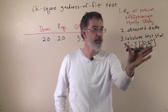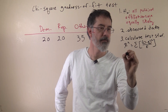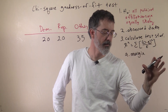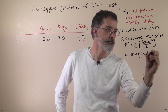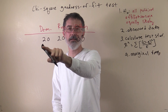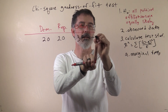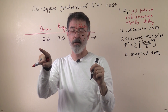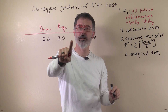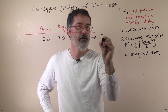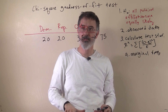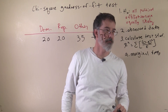Before we can calculate this test statistic, we first need our marginal frequencies, just like we did for the chi-square test for independence. Here there is actually only one margin — it is really our total sample size. So we have 20, 40, 75 observations distributed across our three different groups in our nominal variable, political affiliation.